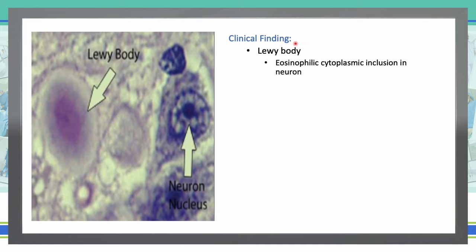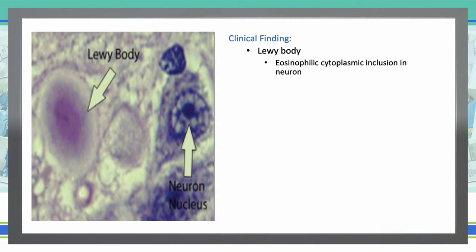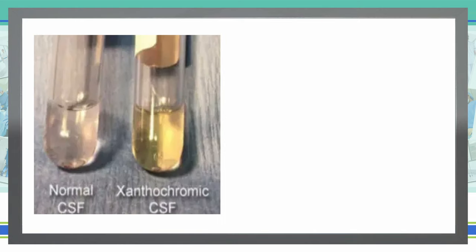Then we have Lewy bodies. Lewy bodies are described as eosinophilic cytoplasmic inclusions in neurons — this is your neuron nucleus and we will see Lewy bodies there. We will see this condition in Lewy body dementia and also sometimes in Parkinson's disease.